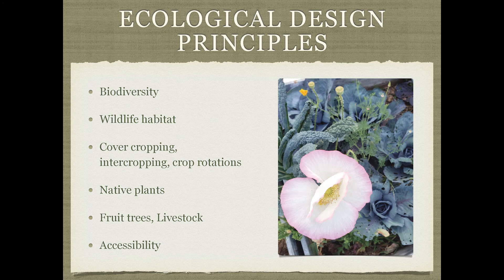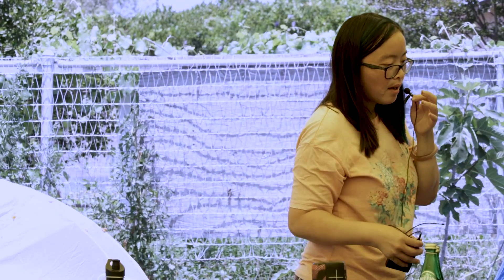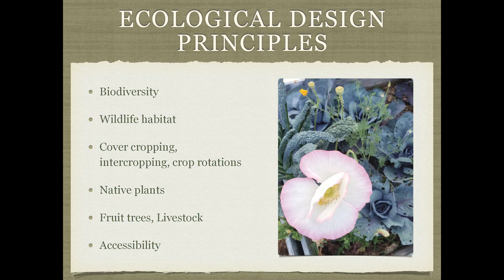Native plants are great to integrate into your garden — they help restore cultural plants of this place, conserve water and resources, and support native wildlife. Many native pollinators use native plants for habitat, reproduction, and feeding, and it's more difficult for them to utilize non-native plants because they haven't evolved that way. Integrating diverse native plants supports native pollinators, biodiversity, and water conservation. Integrating fruit trees and livestock, if possible, creates more diverse agricultural systems that are best for soil health and ecological well-being.